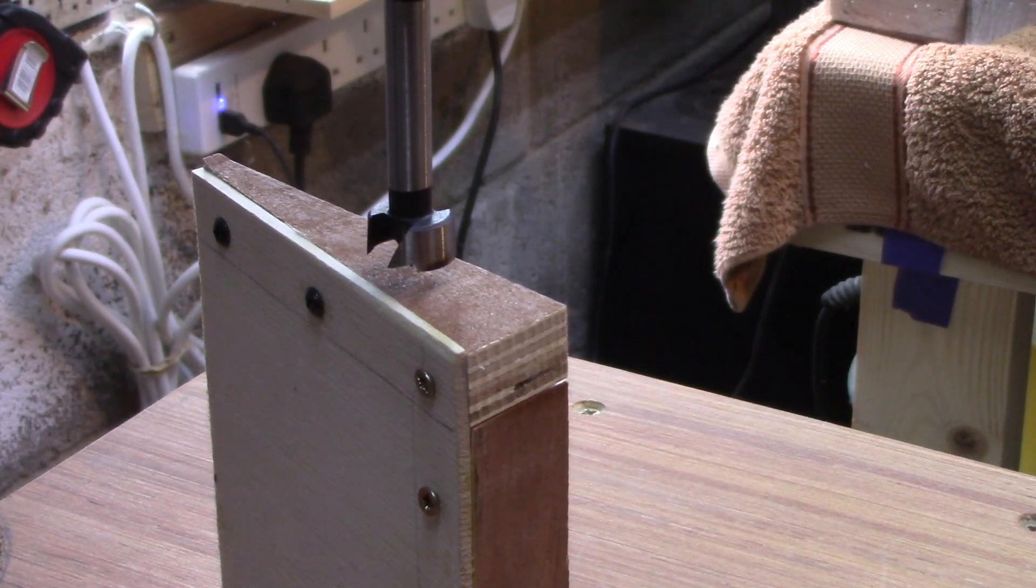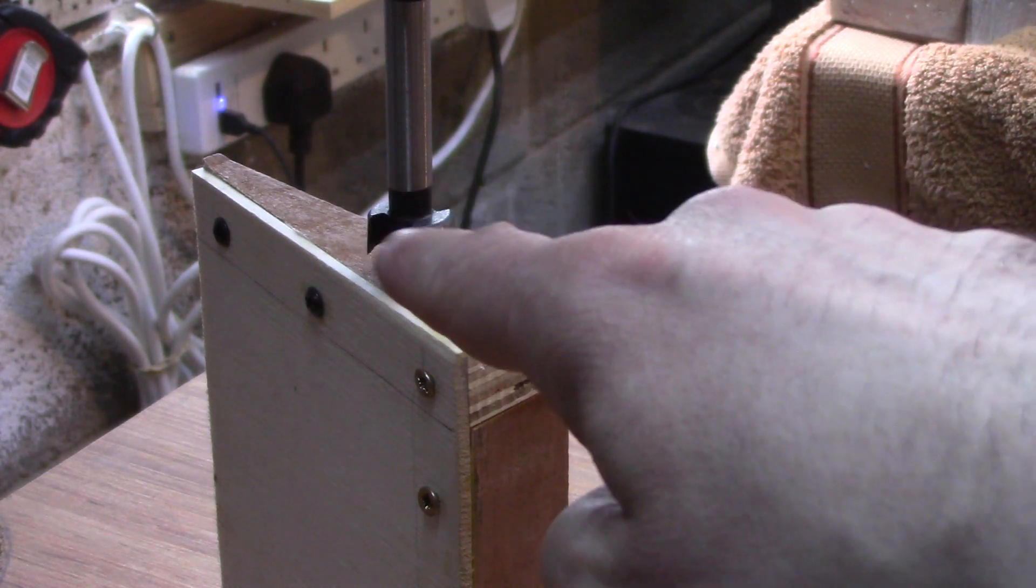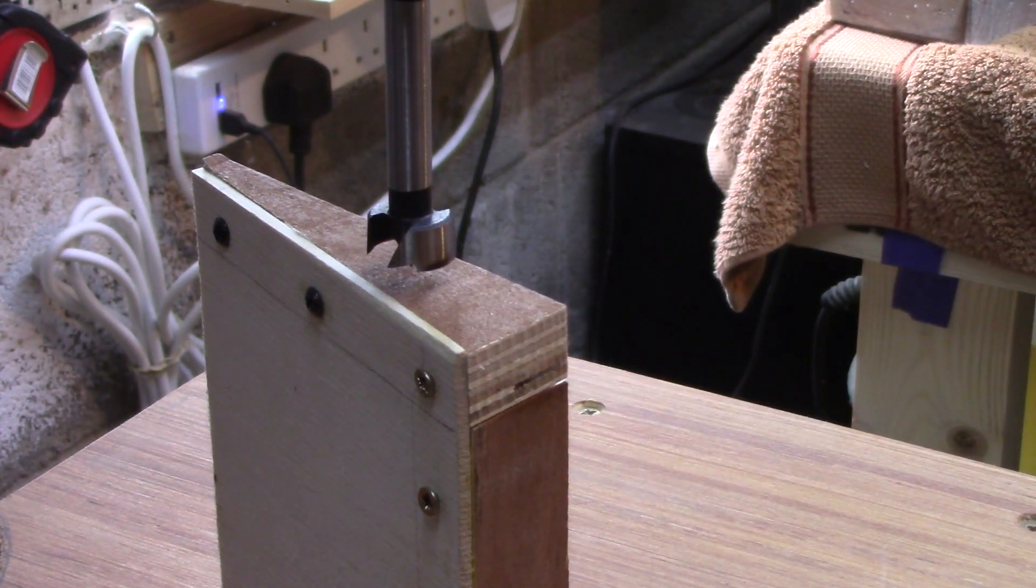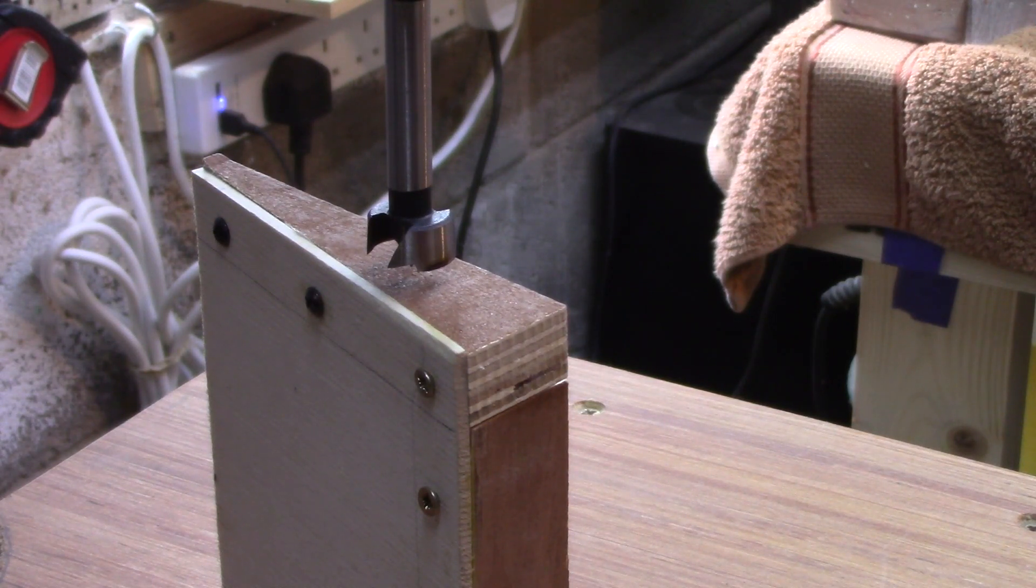So because we've made the sides of our stomp box ridiculously thick, we're just going to do a small counter bore with this forstner bit, just to allow the output jack to go in place. So I'll just drill that out very quickly now.